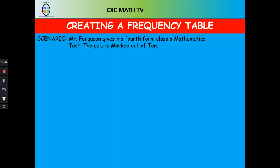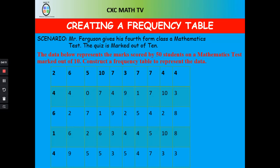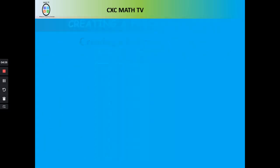Now we can look at constructing a frequency table. Consider this scenario: Mr. Ferguson is giving his fourth form class a test out of 10. The data represents the marks scored by 50 students on the mathematics test. We have someone getting a 2, someone getting a 6, someone getting a 5, and some brilliant students getting 10.